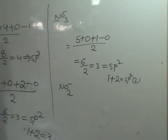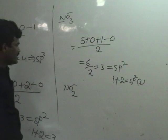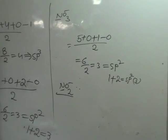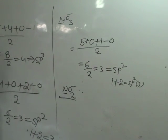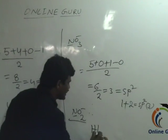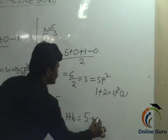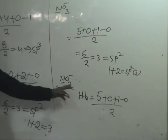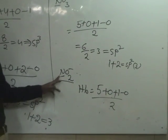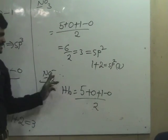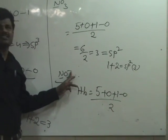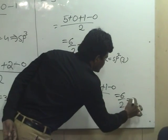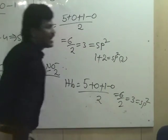In the same way, for NO2 minus — the nitrite ion — nitrogen is the central atom. Nitrogen undergoes sp2 hybridization. Hybridization of nitrogen equals five plus zero plus one minus zero, divided by two. Here five is the valency electrons of nitrogen, zero is for divalent oxygen, and one is the anion charge. That equals six by two, equals three. Three means sp2 hybridization.